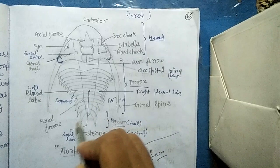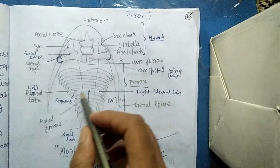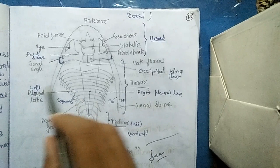These two lines are the axial furrow, and these two lines divide trilobites into three parts. This part is left pleural lobe, this is axial lobe, and this part is right pleural lobe.